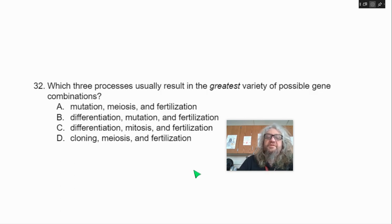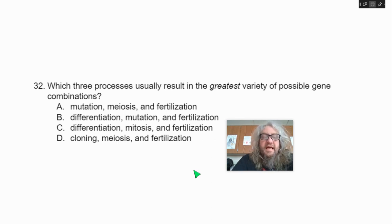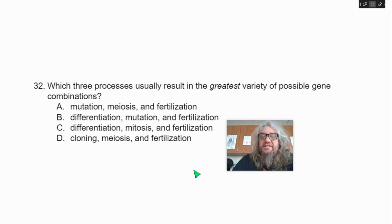Number 32. Which three processes usually result in the greatest variety of possible gene combinations? A, mutation, meiosis, and fertilization; B, differentiation, mutation, and fertilization; or D, cloning, meiosis, and fertilization.